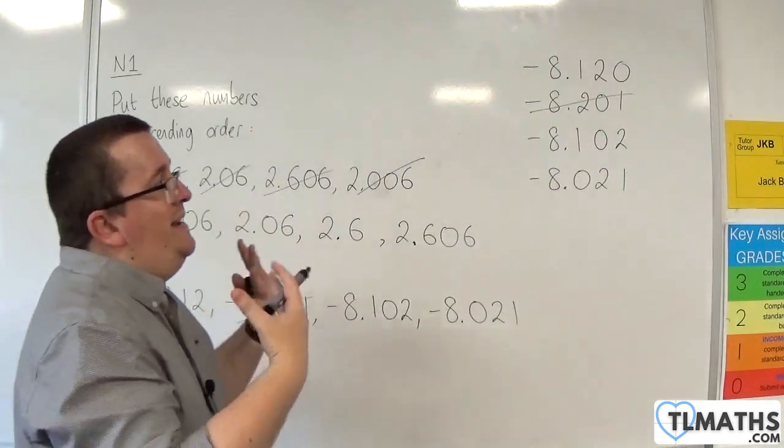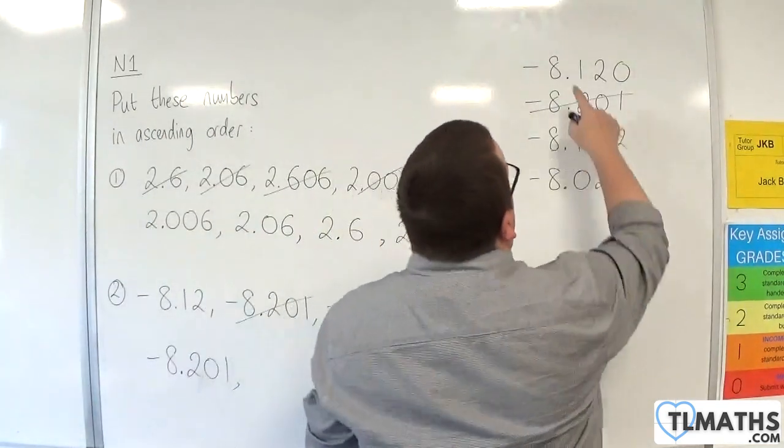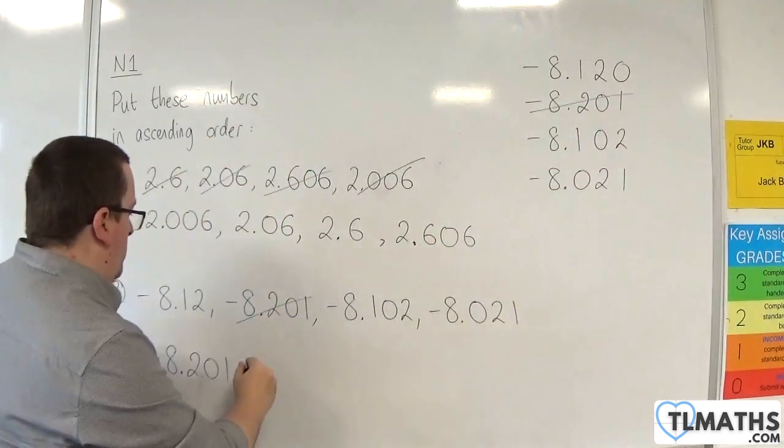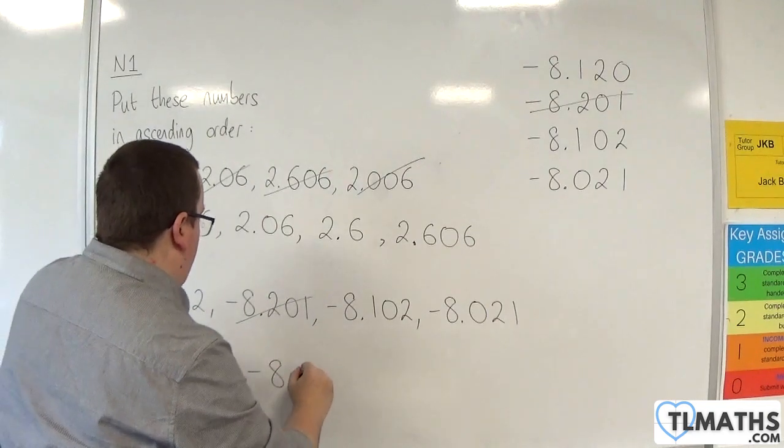Then, the next most negative is the minus 8.120. So minus 8.120, so minus 8.12.